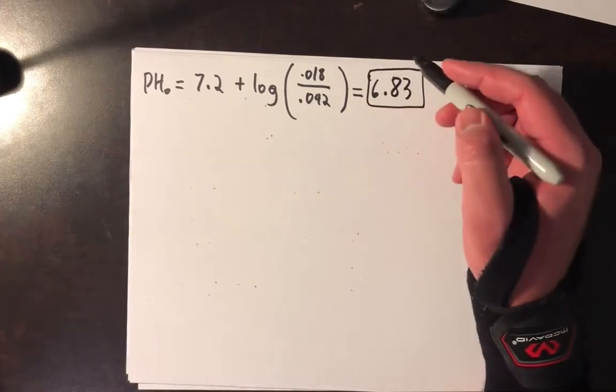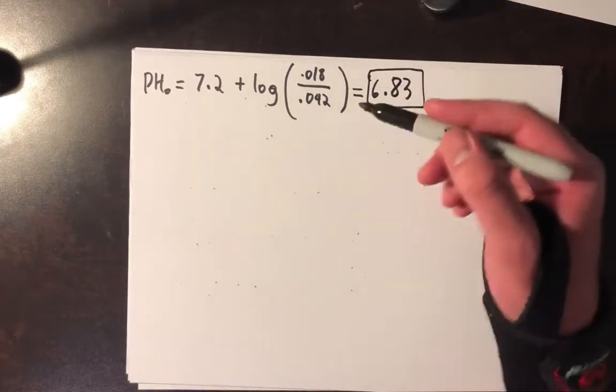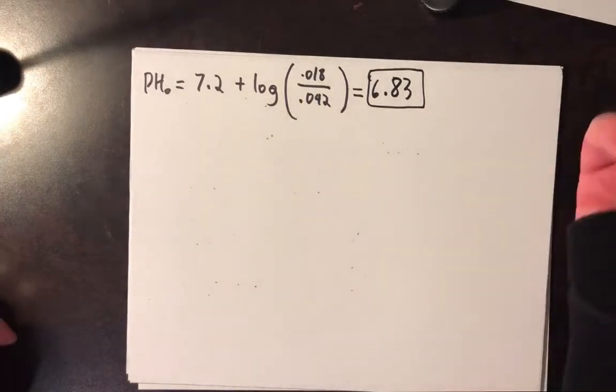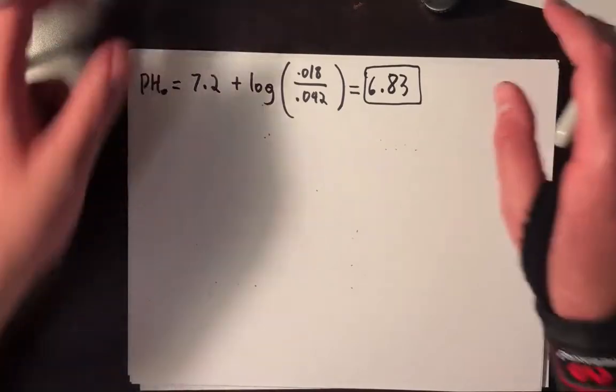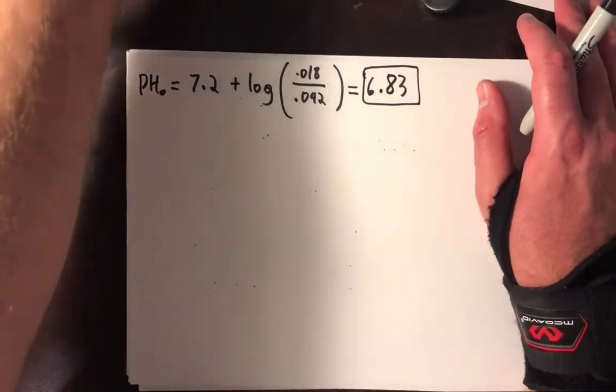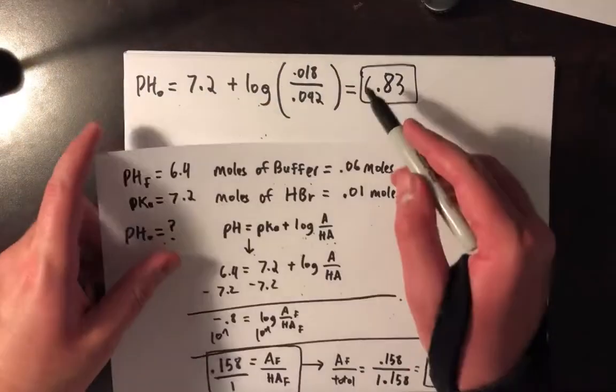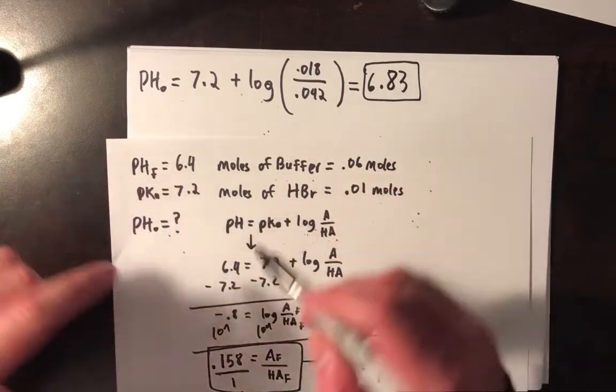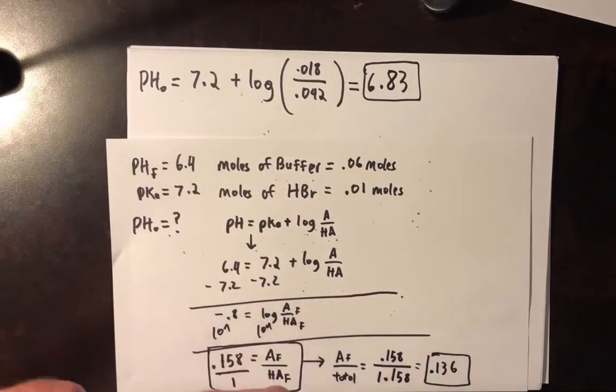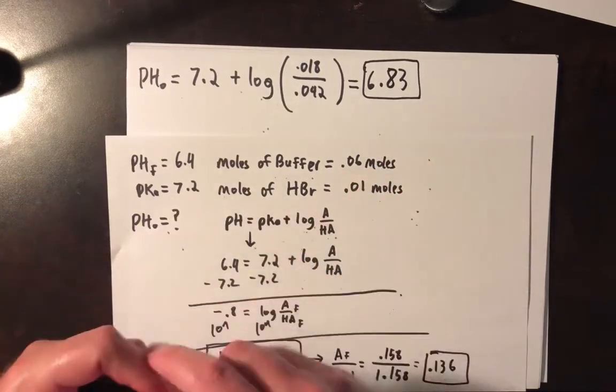And that makes sense because we're within that plus or minus one range of pKa. So addition of even a strong acid isn't going to induce a very large change in the pH. So our initial pH is 6.83. Final pH is 6.4. We have ourselves a pretty good buffer system here going on after the addition of that many moles.